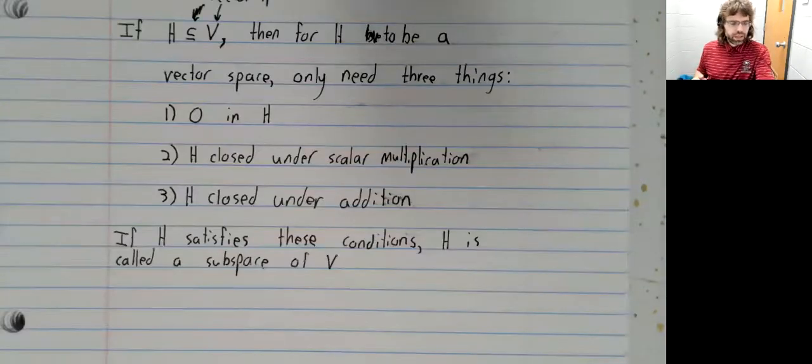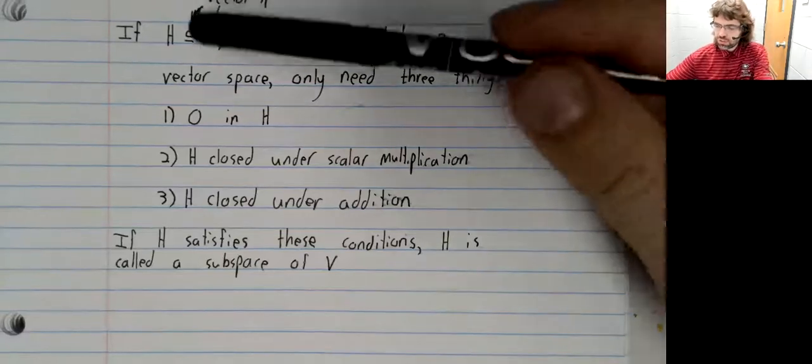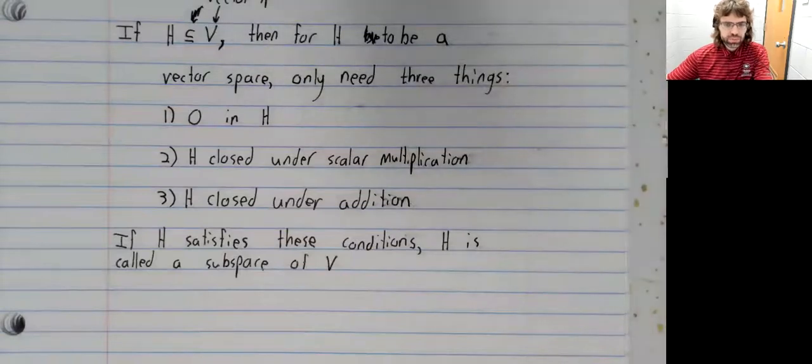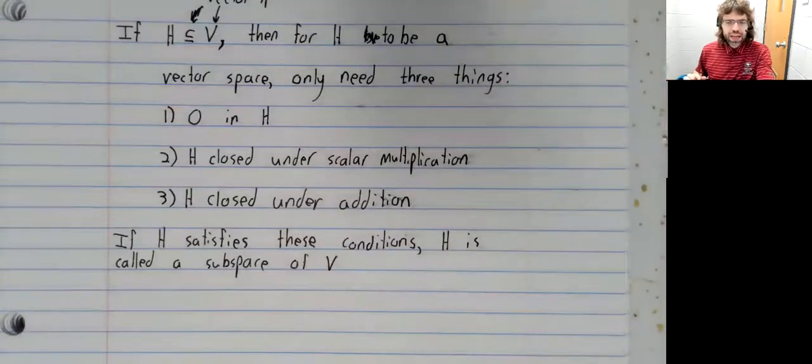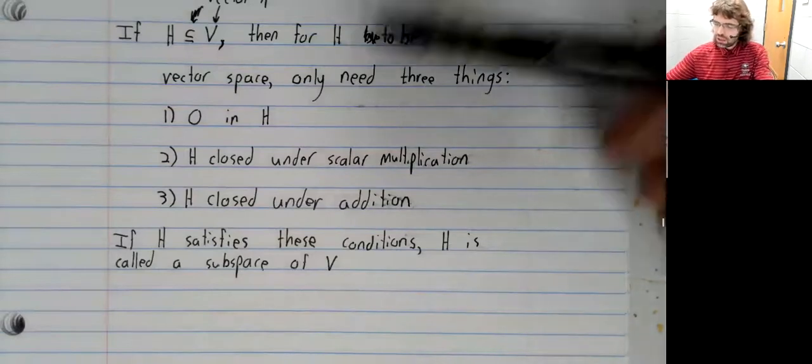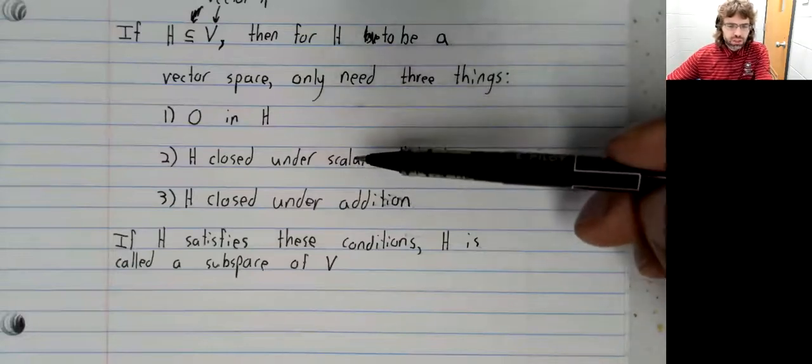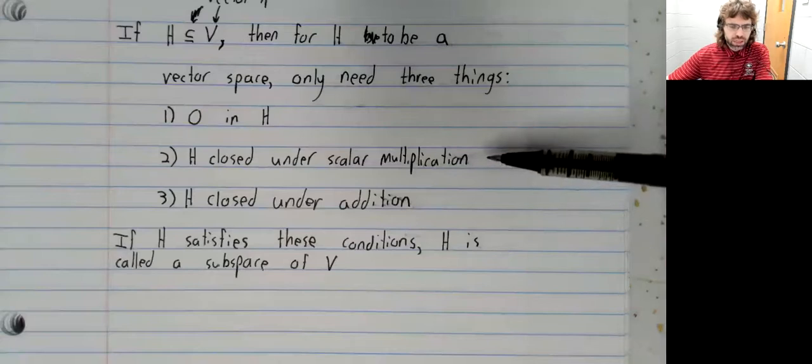Theorem and definition. Suppose that H is a subset of a vector space. Then H has most of the vector space properties. And in order to be a vector space, we only need to check three things. The zero vector has to be in H. H has to be closed under scalar multiplication.